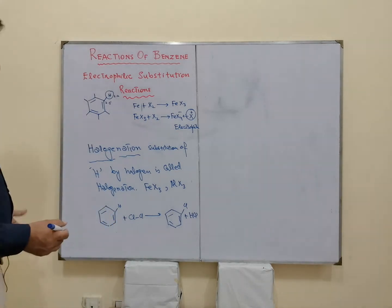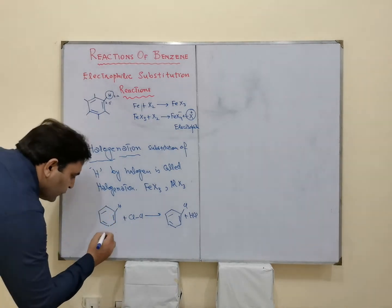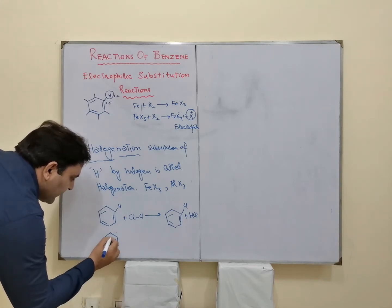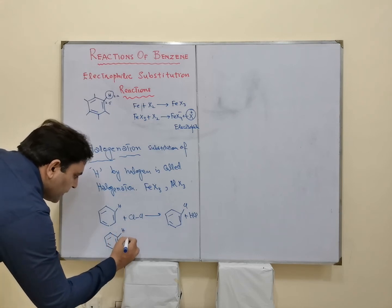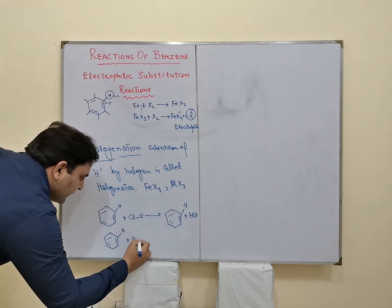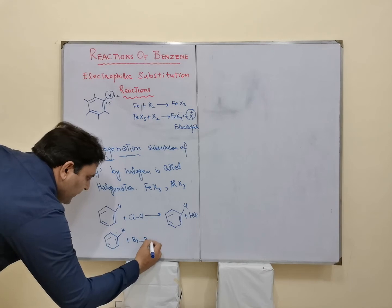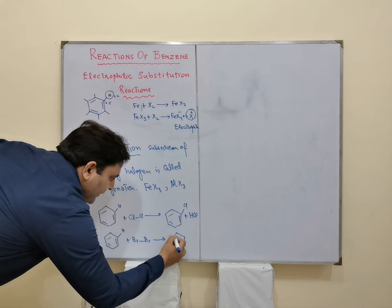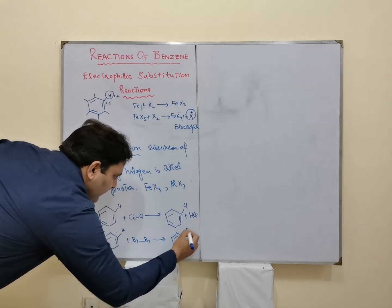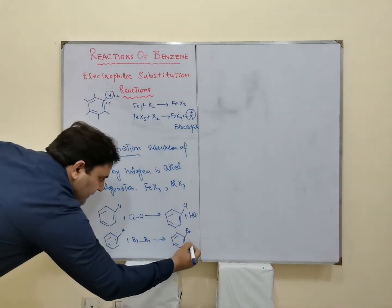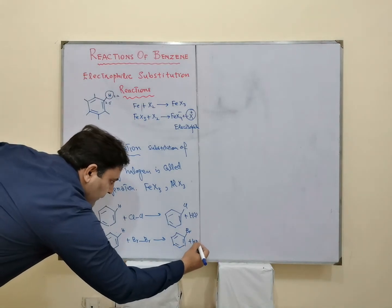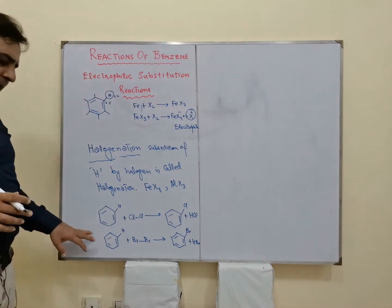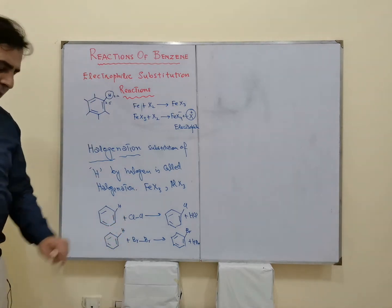یا پھر میں چاہتا ہوں کہ میں اس کی Bromination کروا دوں۔ ابھی اس کا mechanism discuss کریں گے — یہ Hydrogen Bromine کے ساتھ replace ہو جائے تو ہمارے پاس Bromobenzene بن جائے۔ یہ ہم Halogenation کروانا چاہتے ہیں، اور ساتھ HBr بنے گا۔